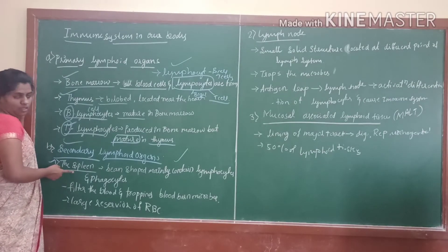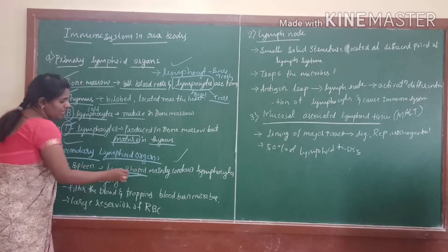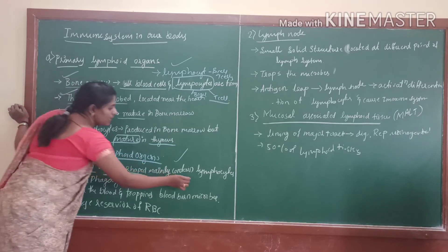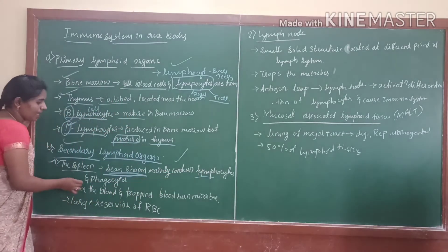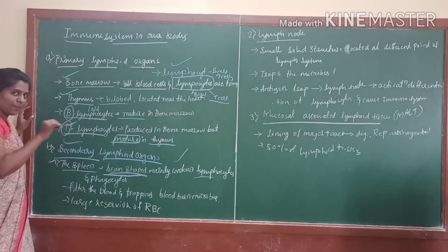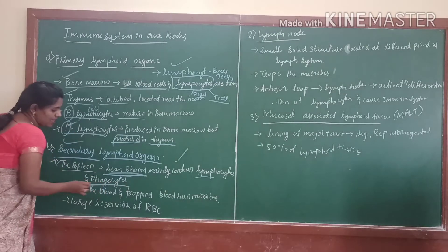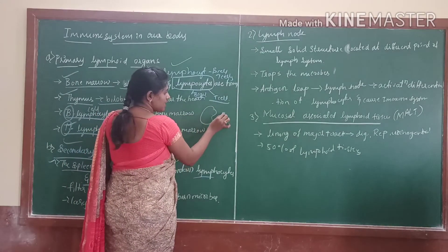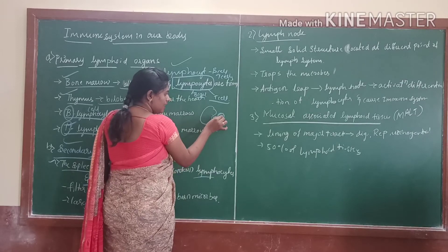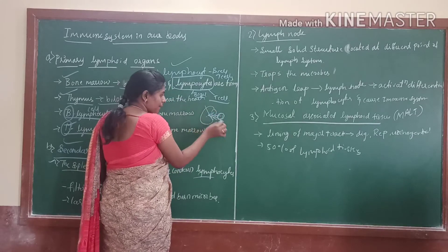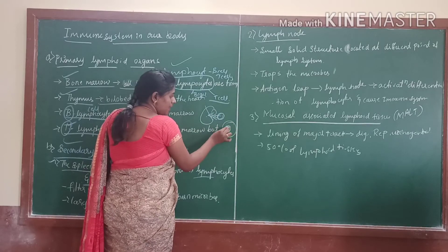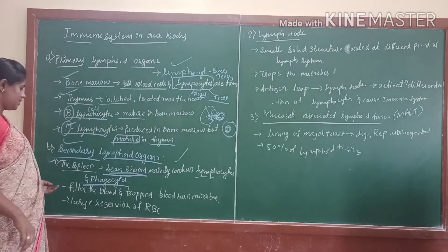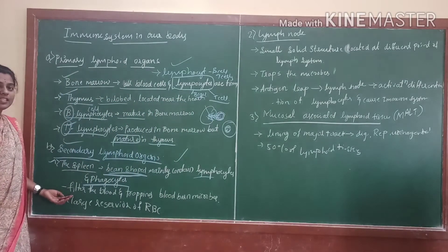The first one is the spleen. The spleen is present in a bean shape and contains lymphocytes. Lymphocytes — majority blood RBC cells are mainly present and phagocytes. The phagocytes — when an antigen affects the cell, these phagocytes engulf and destroy those cells inside. That's why it is called eating of cells — phagocyte cells. And mainly it filters the blood.